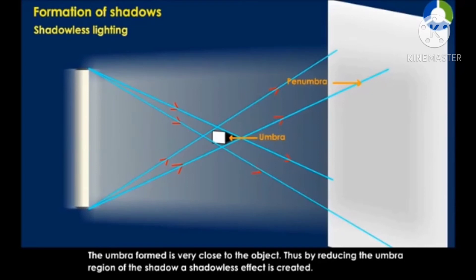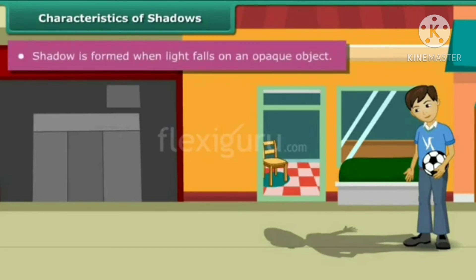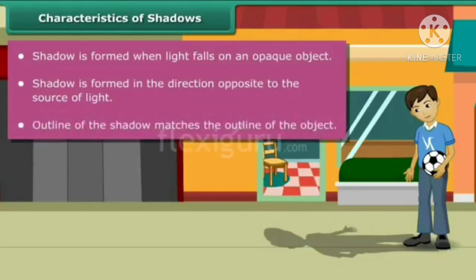You just learned some interesting facts about shadows. Let us list the important characteristics of shadows. Shadow is formed when light falls on an opaque object. Shadow is formed in the direction opposite to the source of light. Outline of the shadow matches the outline of the object.